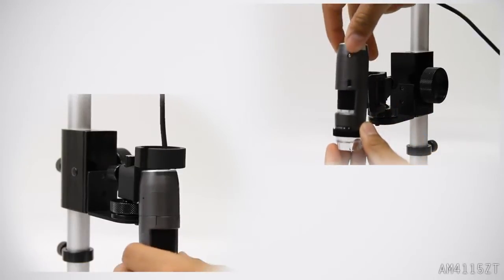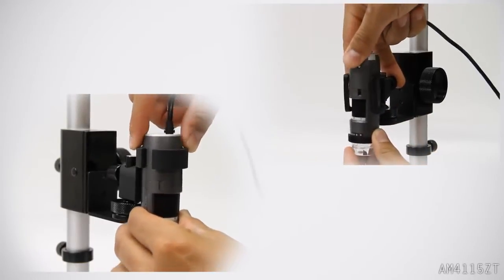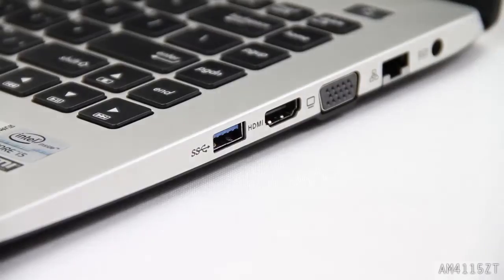To use the AM4115ZT, place it into the holster. Once you install Dynocatcher 2.0, connect it via USB port.